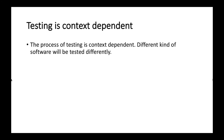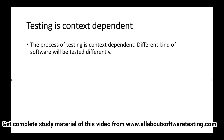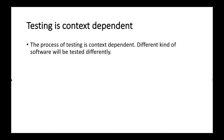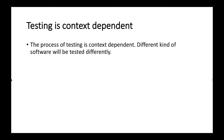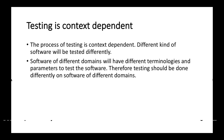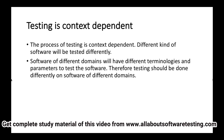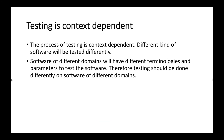The next principle is testing is context dependent. It states that the process of testing is context dependent — different kinds of software will be tested differently. For example, a software for an e-commerce website will be tested differently from a software for a school or college. Software of different domains will have different terms and parameters for testing, therefore testing should be done differently for software of different domains.